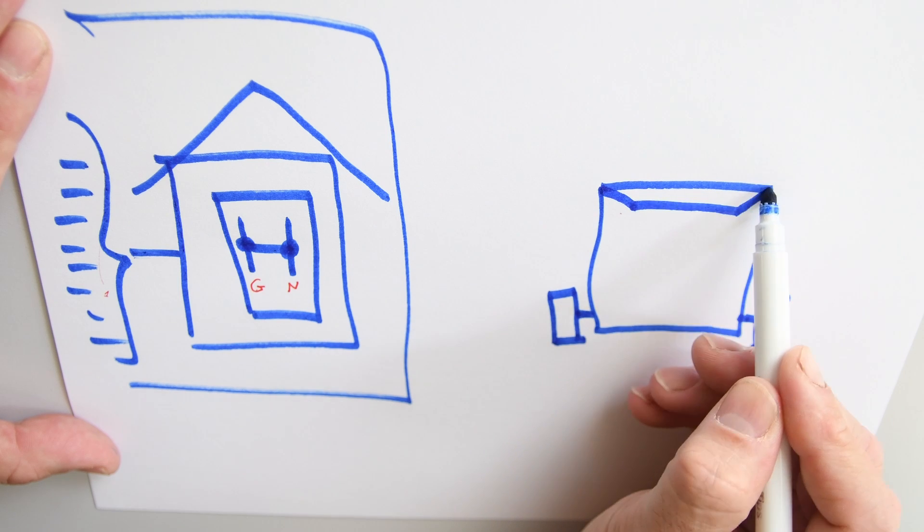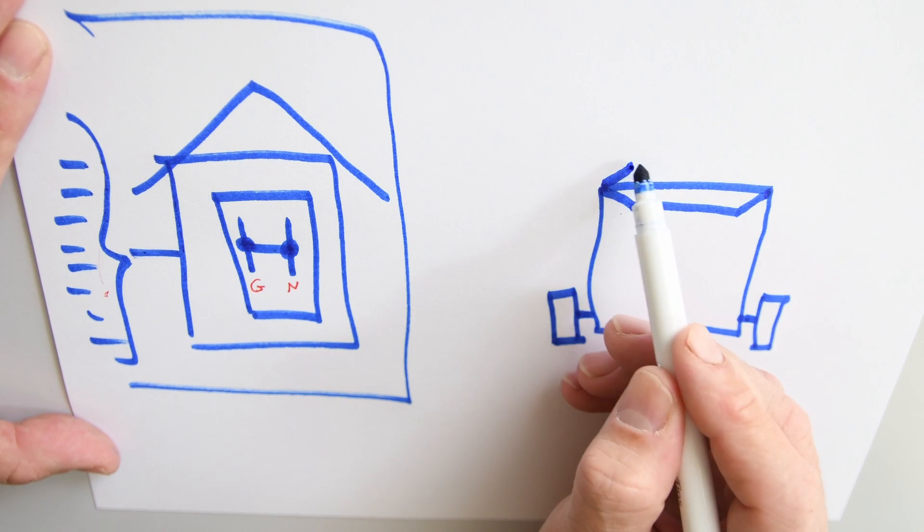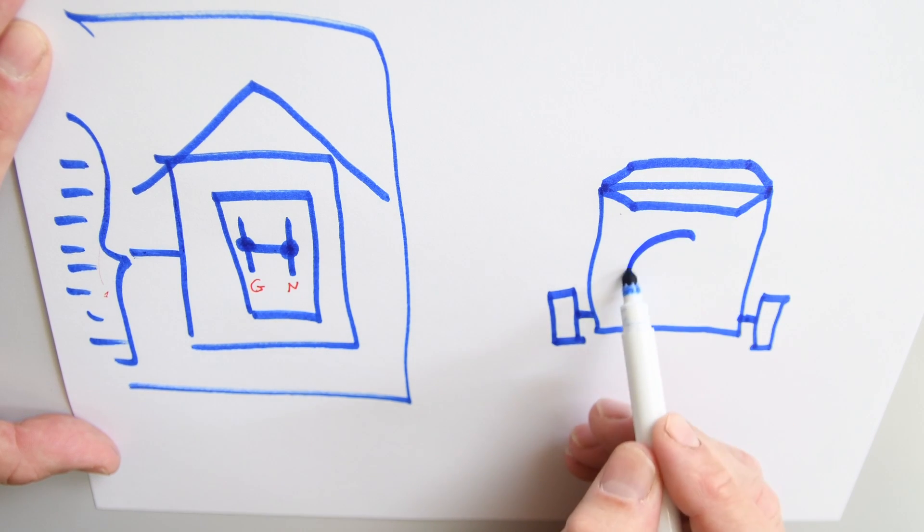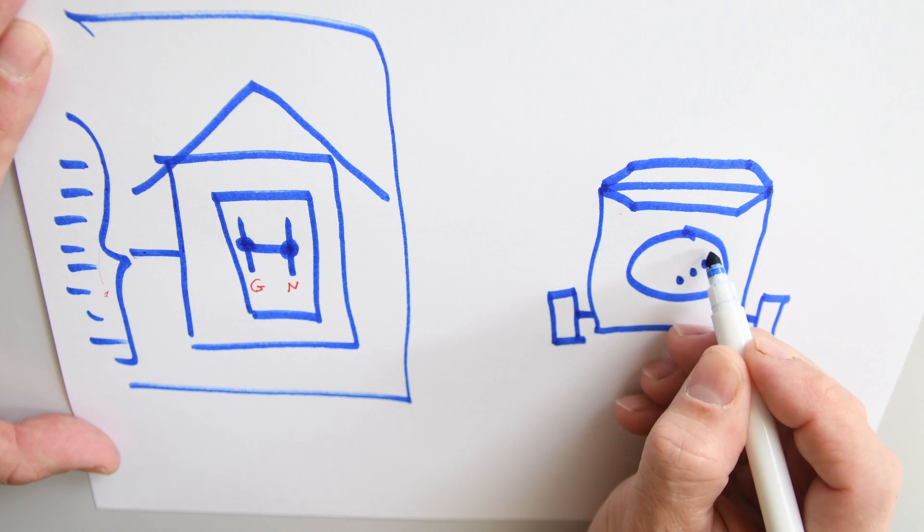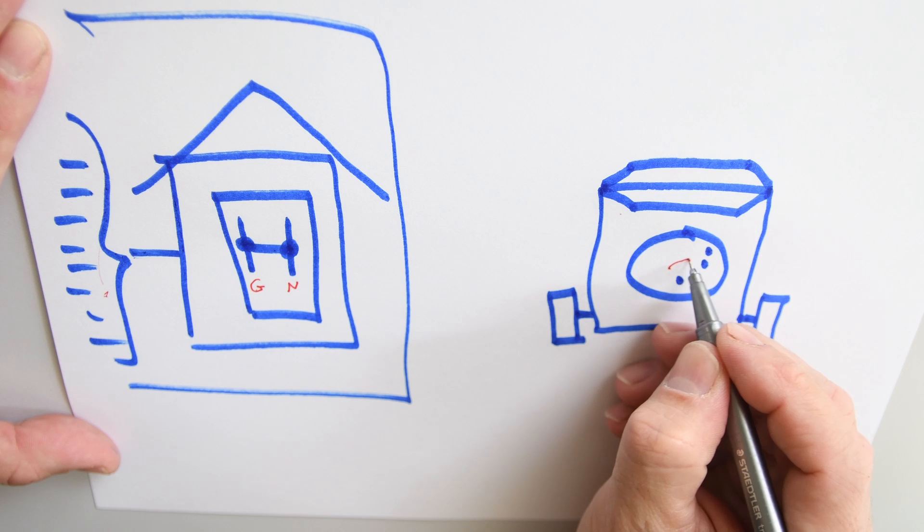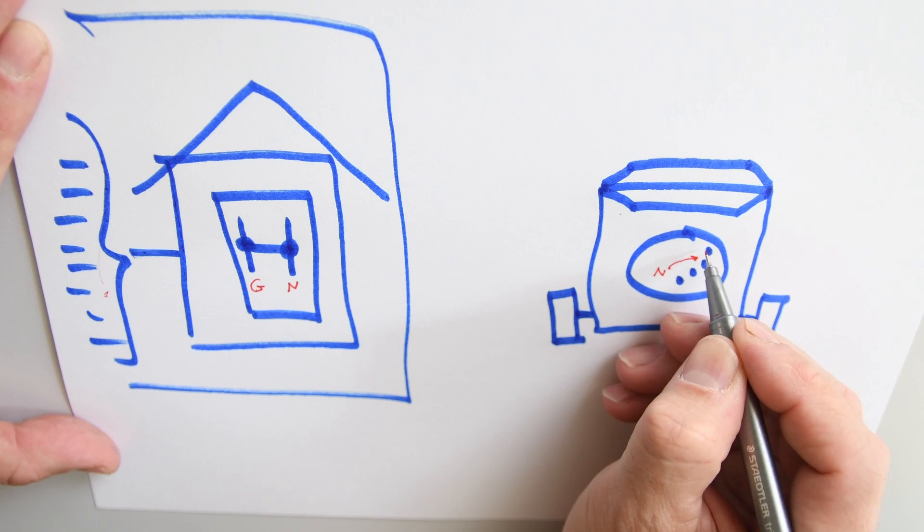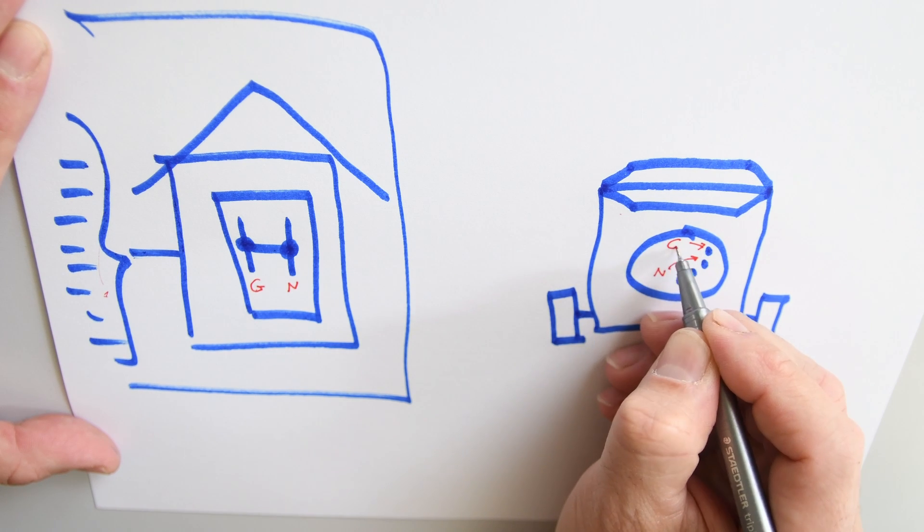So this is our generator. This is the wheel. We're looking from the back. This is the gas tank. This is a round cover in the back. You're going to see there are some connections. One of these connections is going to be called neutral and one of these is ground.